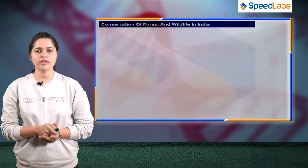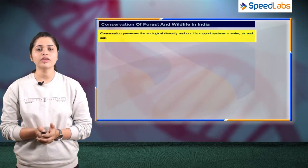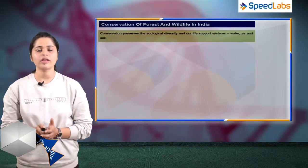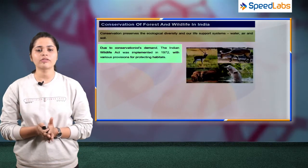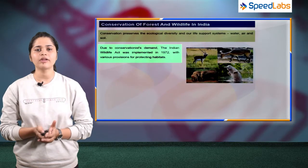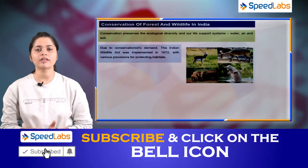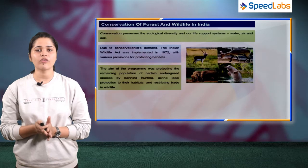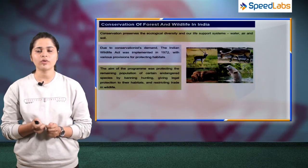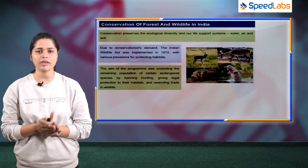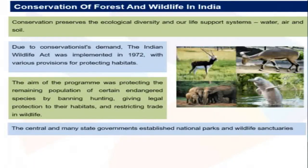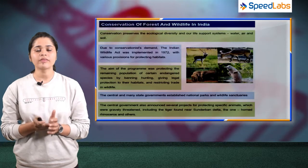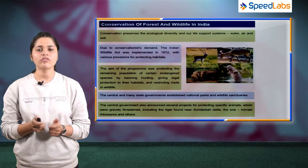Conservation preserves ecological diversity and our life support systems — water, air, and soil. Due to conservationist demands, the Wildlife Act was implemented in 1972 for habitat protection, aiming to protect the remaining population of endangered species. Central and state governments have also opened several national parks and wildlife sanctuaries, and the central government announced special projects specifically for tigers and great Indian one-horned rhinos.